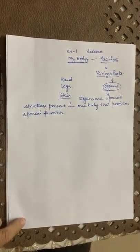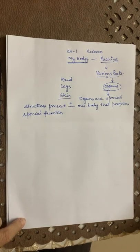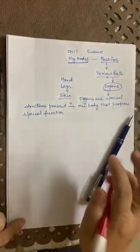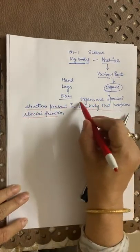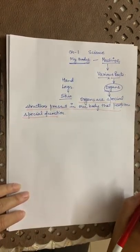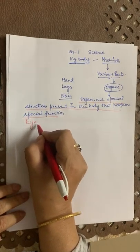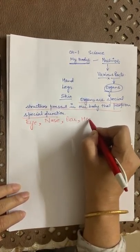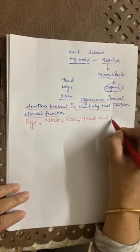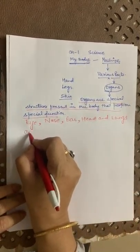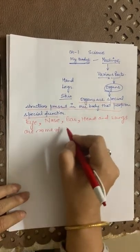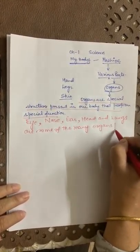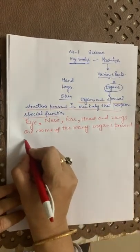Organs are special structures present in our body that perform special functions. So what is an organ? Organs are special structures present in our body that perform special functions. Can you name some organs? Eyes, nose, ear, heart, and lungs are some of the many organs present in our body.